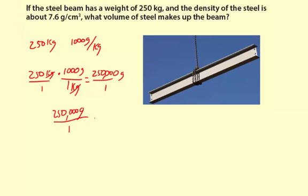250,000 grams to 1, and then we want to get rid of the grams and have centimeters cubed. So how do we do that? Well, we have grams in the numerator here, so we need grams in the denominator here. And we need centimeters cubed in the numerator.